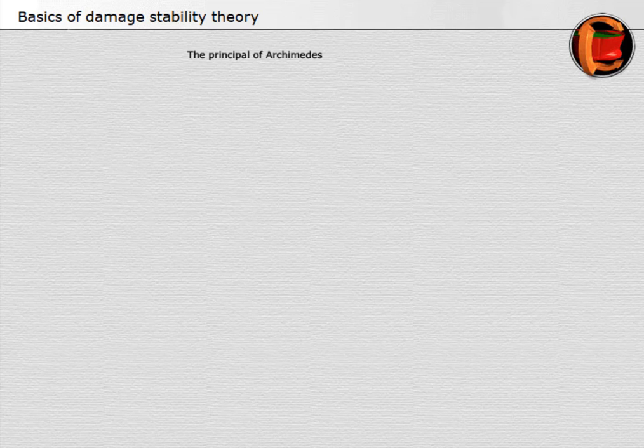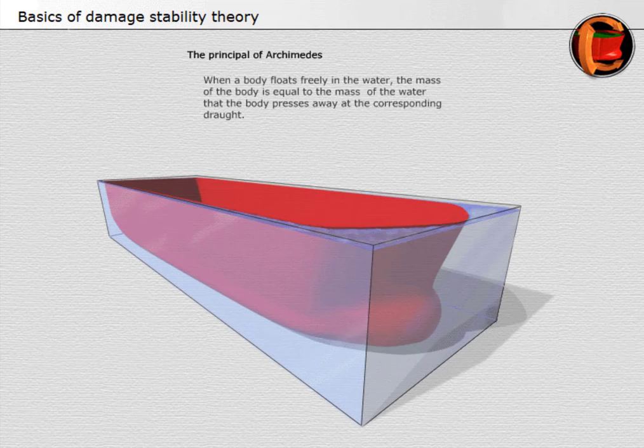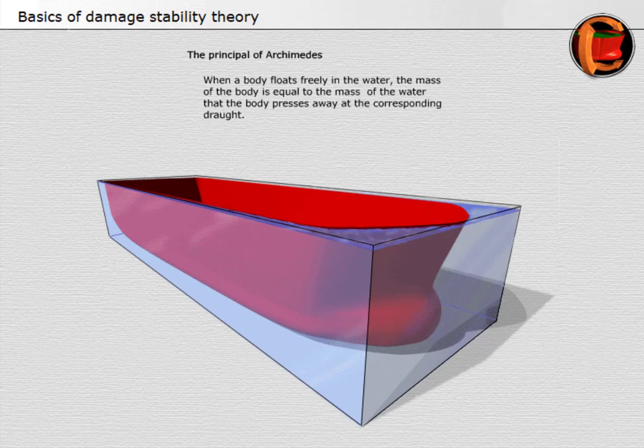The principle of Archimedes: when a body floats freely in the water, the mass of the body is equal to the mass of the water that the body presses away at the corresponding draft.